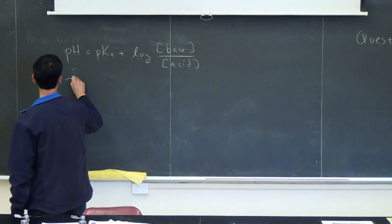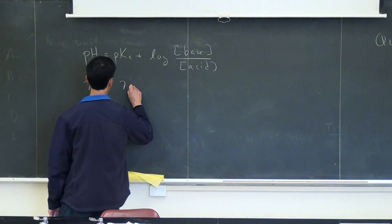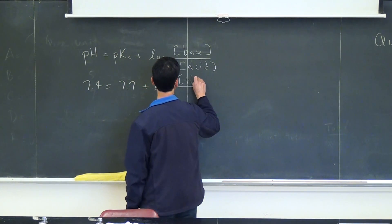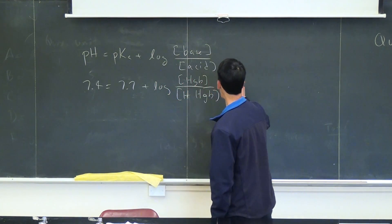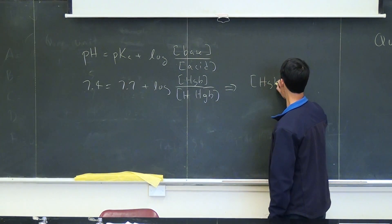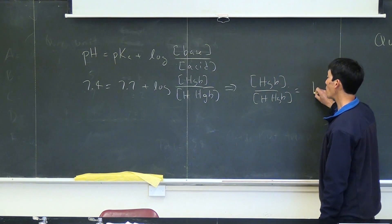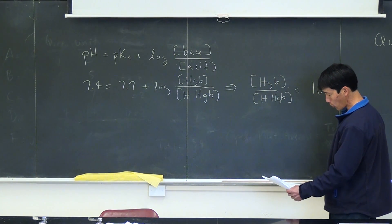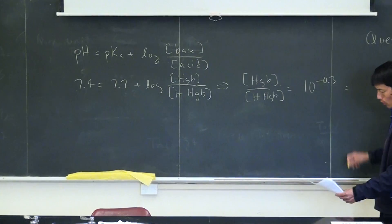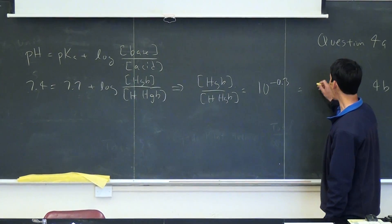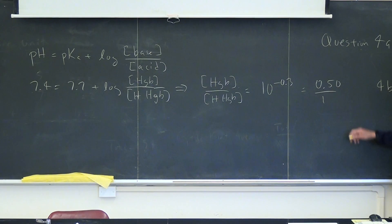The Henderson-Hasselbalch equation states: pH = pKa + log([base]/[acid]). Plugging in our numbers — blood pH is 7.4, for HHgb the pKa is 7.7, the base is Hgb, and the acid is HHgb — we can solve for the ratio. That gives 10 to the minus 0.3 power, which equals approximately 0.5. So for every one HHgb, there is only 0.5 Hgb.